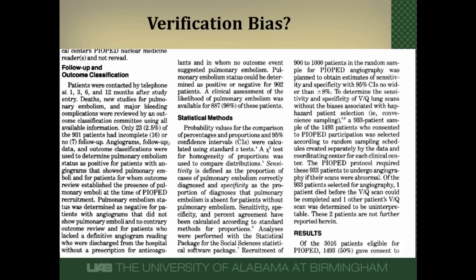Let's read the PIOPED excerpt. Look at the positivity criteria, and then read to see if everybody underwent both the VQ scan and the pulmonary angiogram. The PIOPED protocol required everybody to undergo angiography only if their VQ scans were abnormal — that seems to be a problem. We want even people with normal VQ scans to undergo angiography, because we need to determine how good the VQ scan is. Can it detect everybody? Does it miss people?